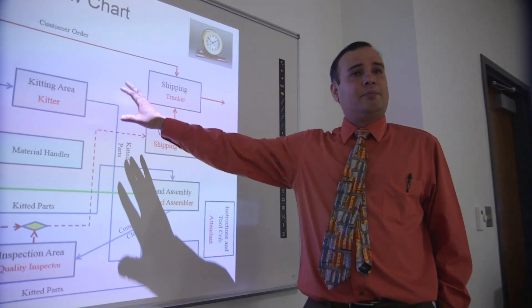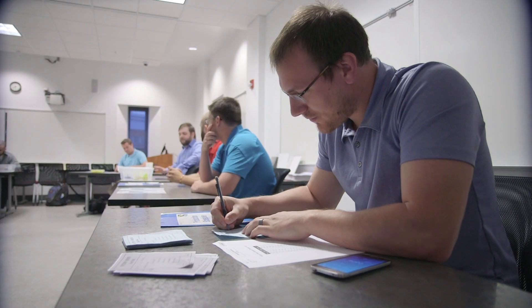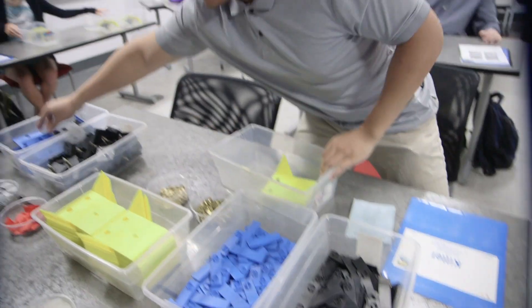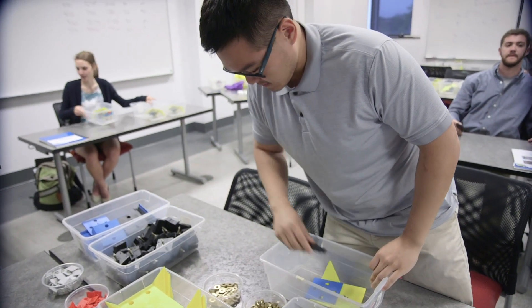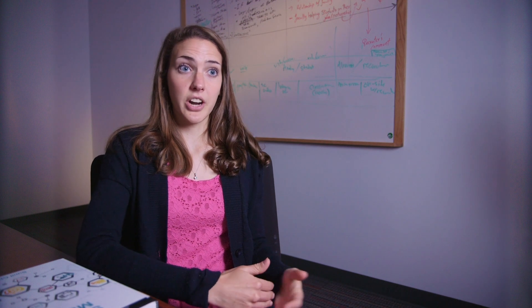This is going to be a process layout of how we make clocks today. In the supply chain program, there's one class, Operations Management. And what they do in that class is they go through a whole ERP process, which stands for Enterprise Resource Planning. It's a system that allows the company to integrate all their functional areas. Not many schools offer that type of course in undergraduate.